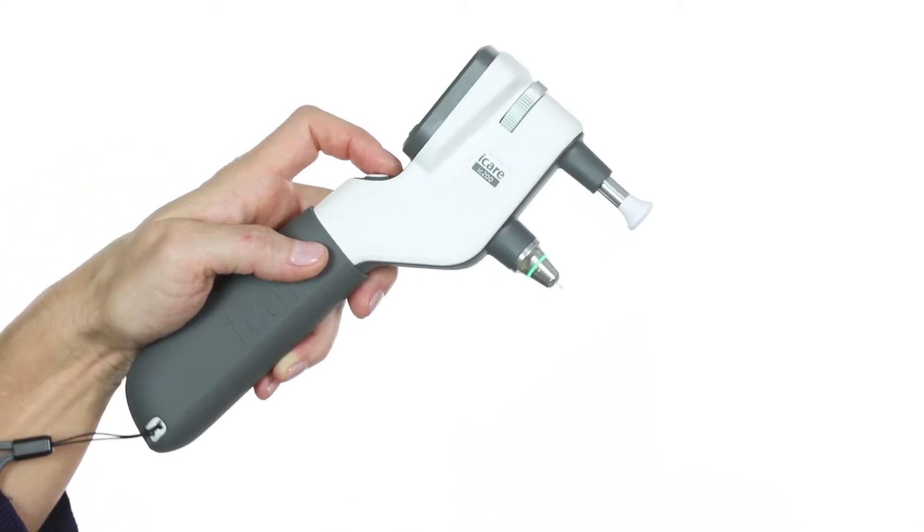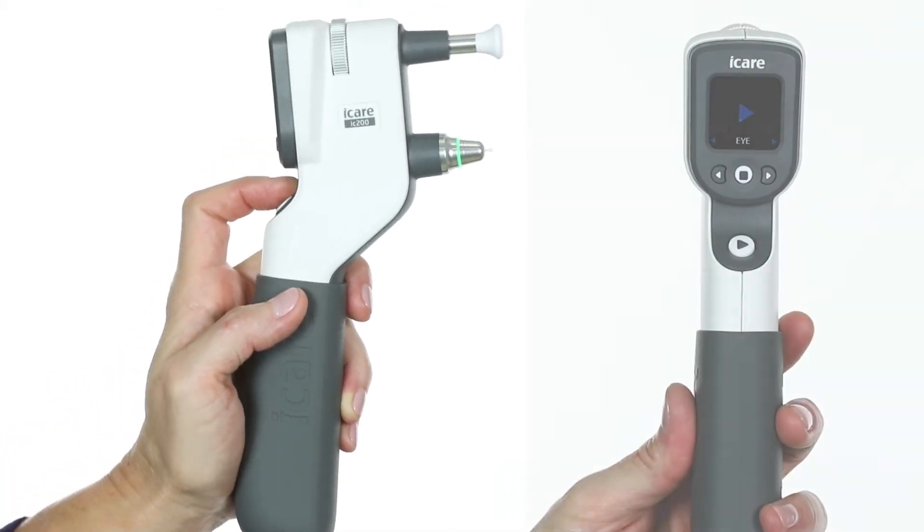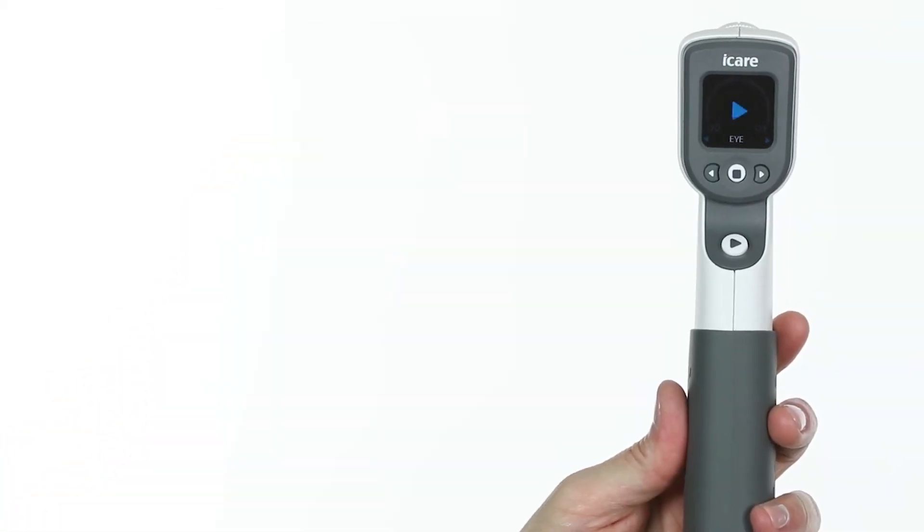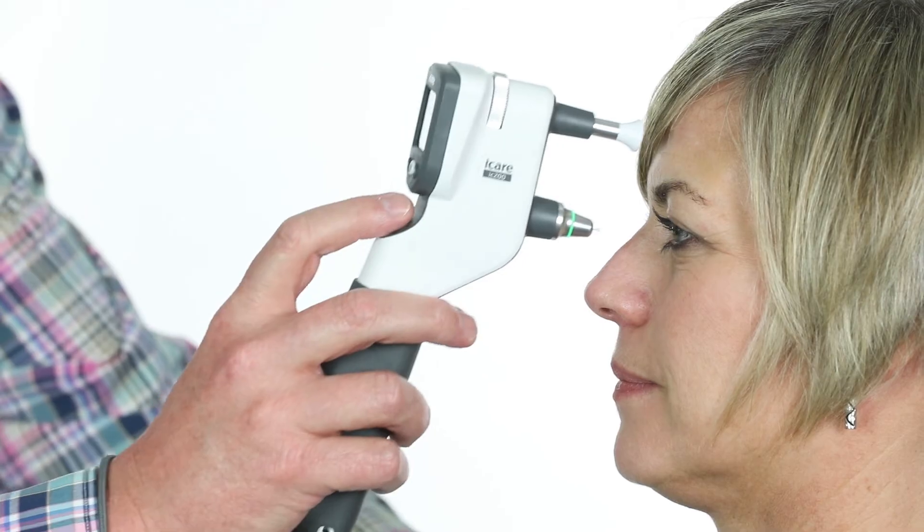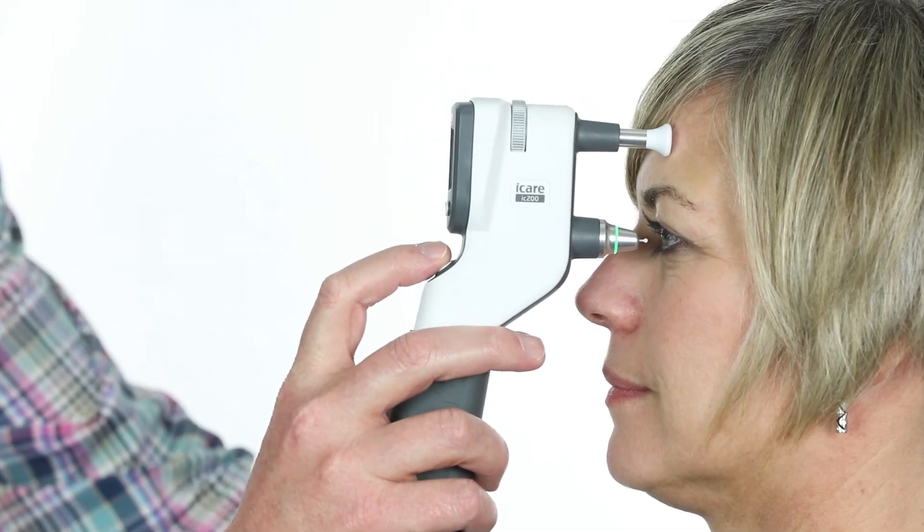The tonometer is ready to take a measurement when the blue play symbol appears. Place the forehead support on the patient's forehead. Aim the probe in the center of eye about 5 millimeters away and perpendicular to the cornea.